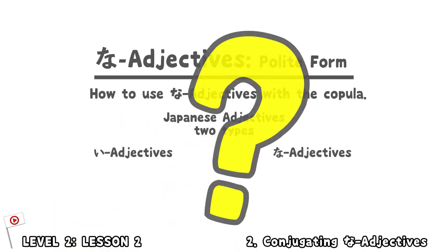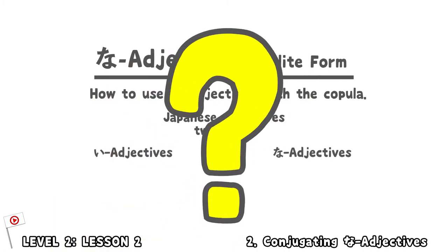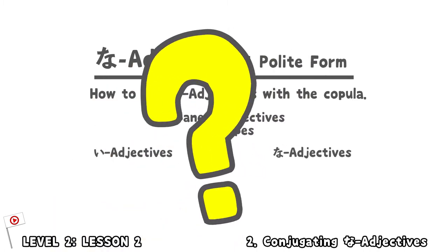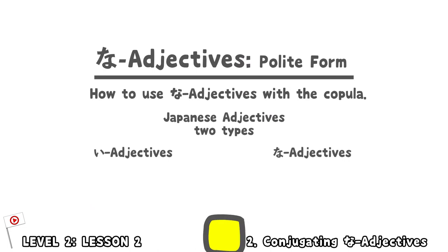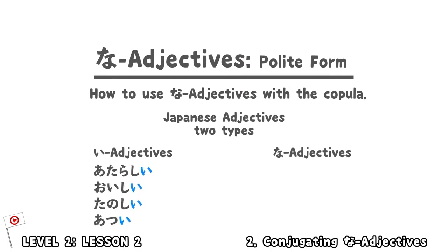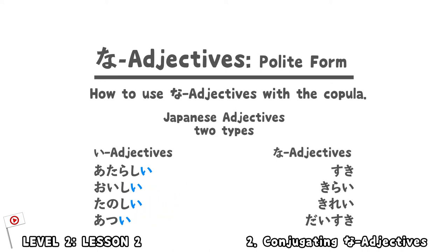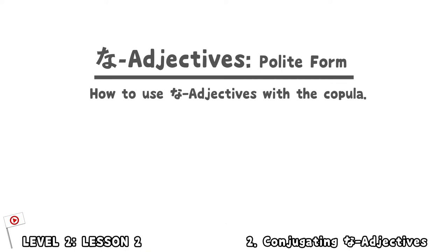How can you tell whether an adjective is an i-adjective or a na-adjective? I-adjectives end with an i- sound, while most na-adjectives do not have these i- endings — with a few exceptions such as kirai and kirei. But there aren't that many of them so you can memorize them. Adjectives in Japanese can be conjugated depending on tense and whether the sentence is affirmative or negative.